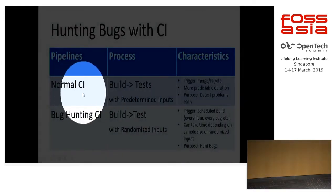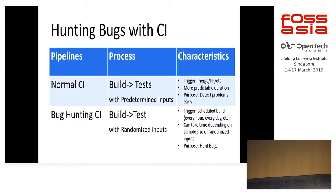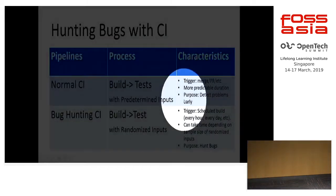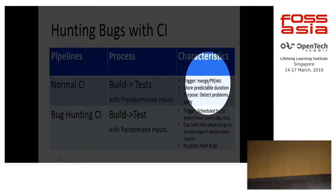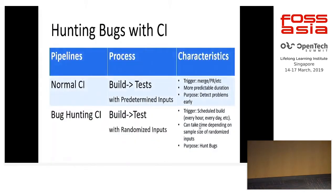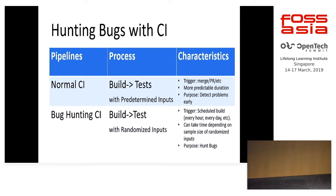We have the normal CI pipeline — keep it there, it does its job. Its purpose is early detection of problems. What we want to add is another CI pipeline dedicated to bug hunting. The difference is: instead of being triggered by merges and pull requests, I want this to be scheduled — as often as possible, maybe every hour or every day. The purpose is to hunt bugs even when I'm away or sleeping, trying randomized inputs and flagging any combinations that fail.